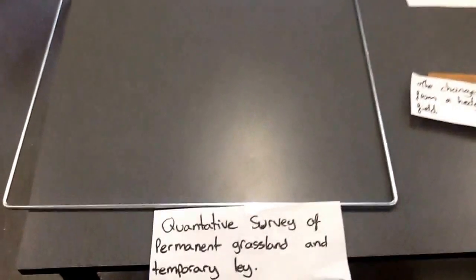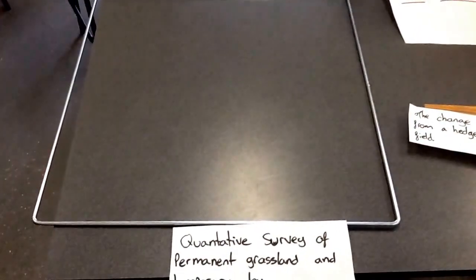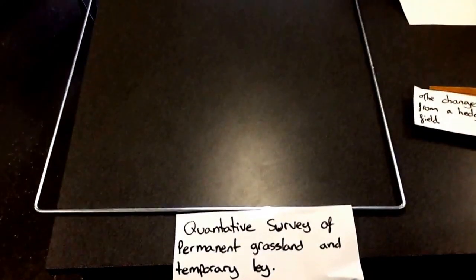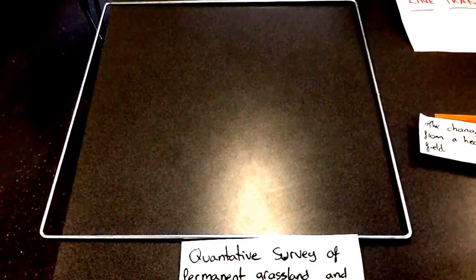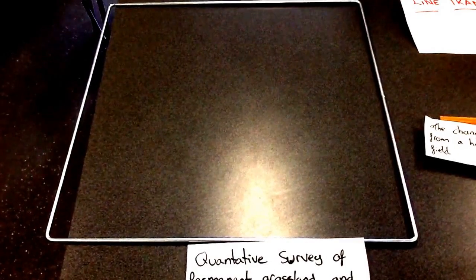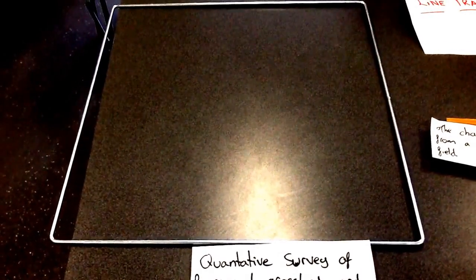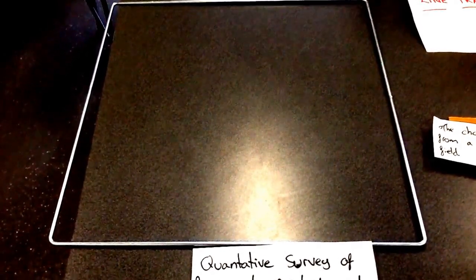Okay, the first experiment here is the quantitative survey of permanent grassland and temporary lay. What this is is a quadrat and it's used to see what types of vegetation is in a lay field. You bring the quadrat out, you throw it over your shoulders and you see, you have a little chart and you mark down what buttercups and what type of weeds is in the permanent.